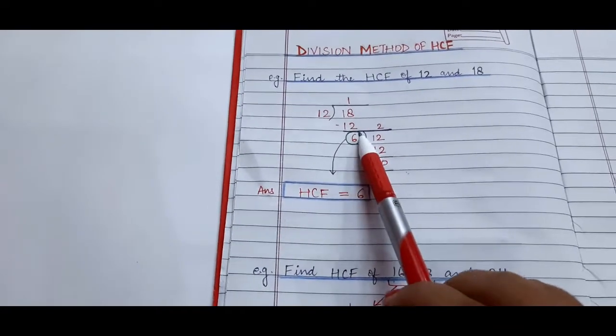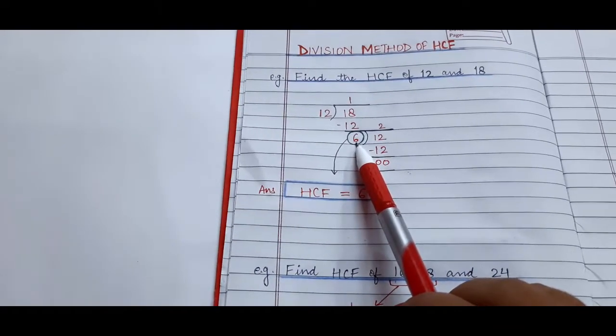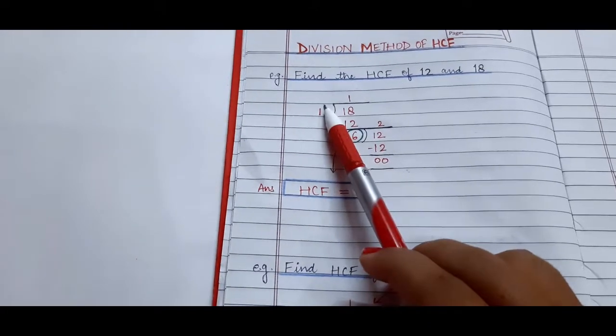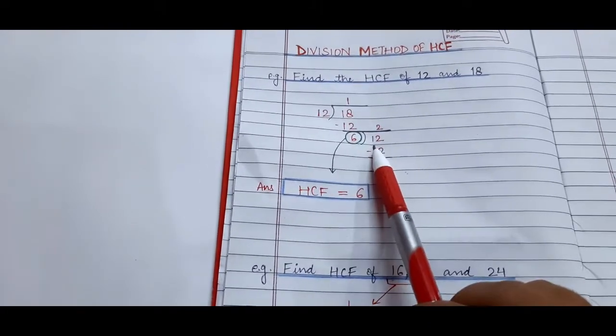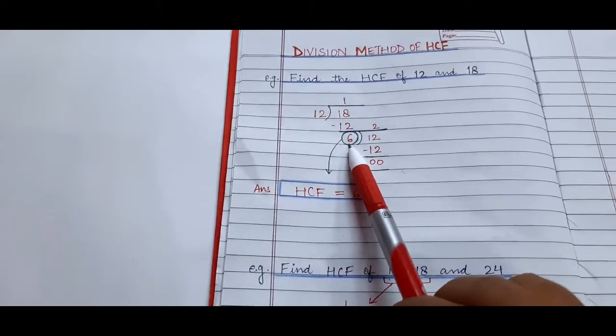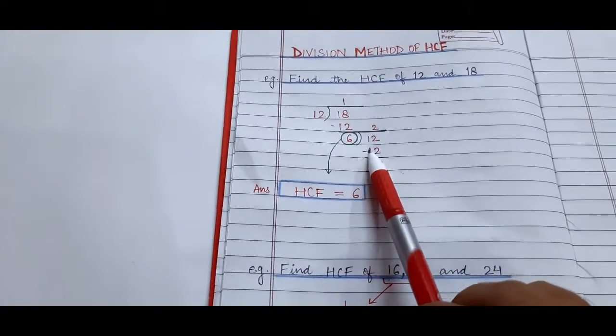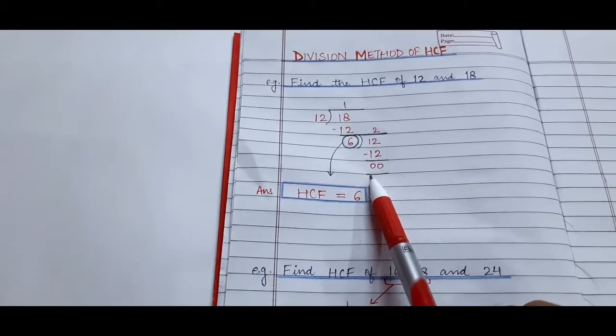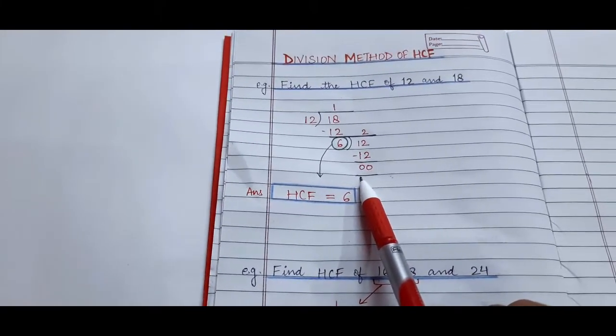Now since a remainder is left, we will again divide this number. So we write 12 here and divide 12 by 6. 6 twos are 12. Now see, no remainder is left, meaning the remainder is 0.